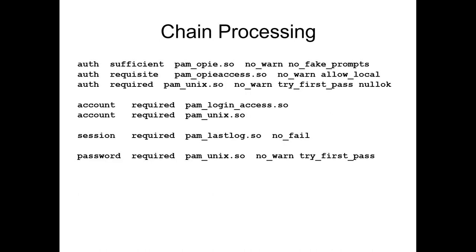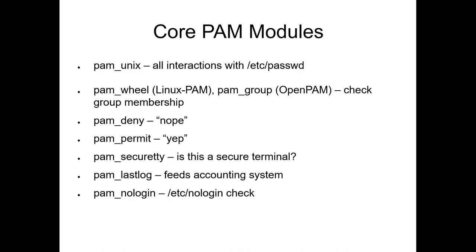So what happens when someone logs in: they pass through the sample auth chain. We then check the account chain to see if this account is available at this time — check for things like is there an /etc/nologin file, are the user's permitted hours in? As part of the session setup, you log to last, and if they're trying to change the password, we fire up pam_unix. Modules you'll see a lot in OpenPAM — actually, anywhere except Solaris — all of these names come from Solaris, and Solaris has thrown them away.